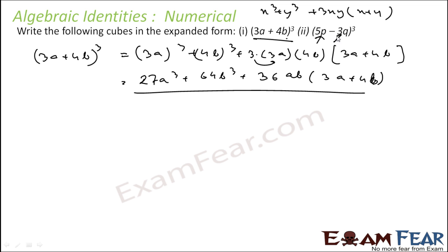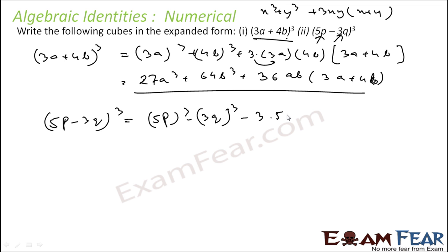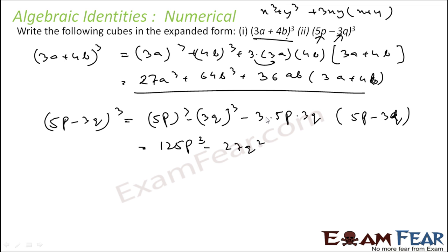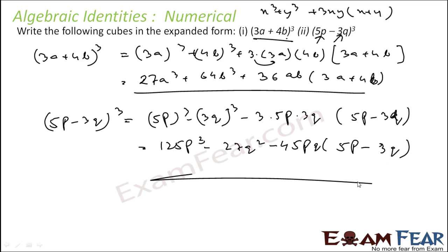This is the (a − b)³ example. If you want, the (a − b)³ formula gives: a³ − b³ − 3ab(a − b). Solving this: 5³ = 125, 3³ = 27, and 3 × 5 × 3 = 45, giving the final term as 45(5p − 3).